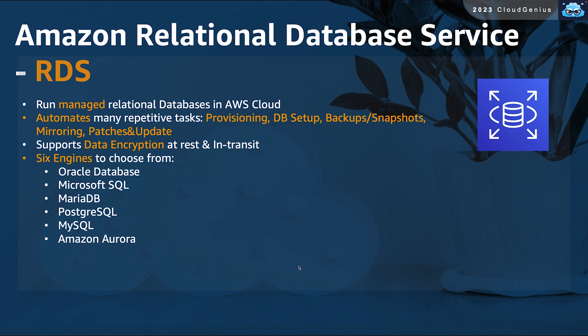RDS is capable of enabling data encryption for data at rest and in transit. When you want to run a new RDS instance on AWS, you need to choose from one of six database engines. The options are Oracle Database, Microsoft SQL, MariaDB, PostgreSQL, MySQL, and Amazon Aurora.